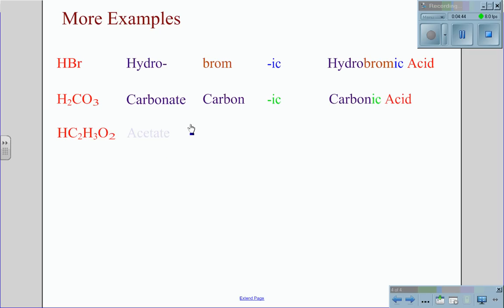HC2H3O2. Polyatomic ion C2H3O2 is acetate. The root we will use is acet from acetate. IC comes from the -ate at the end of acetate, and we get acetic acid.